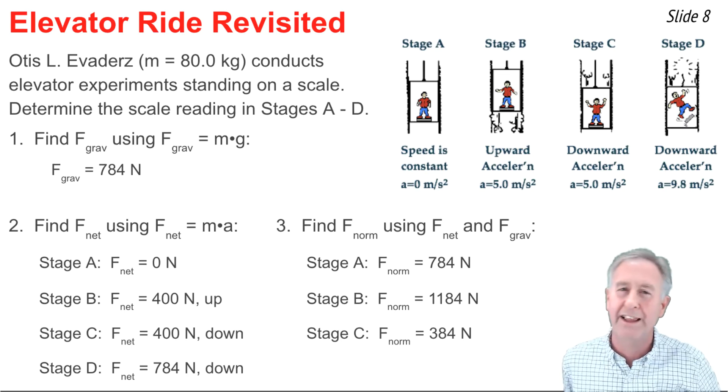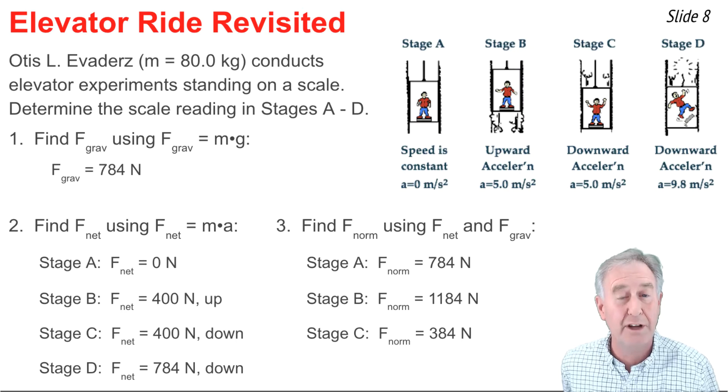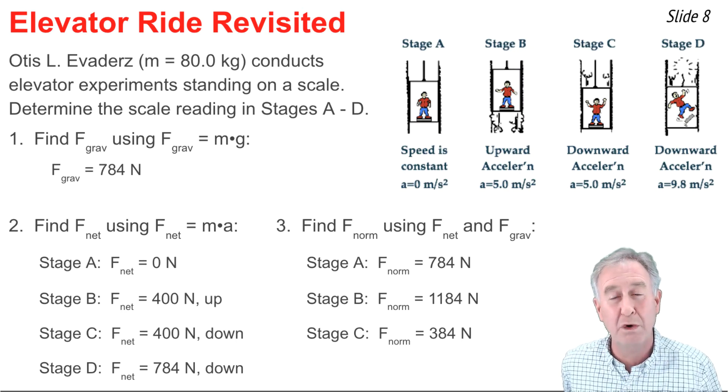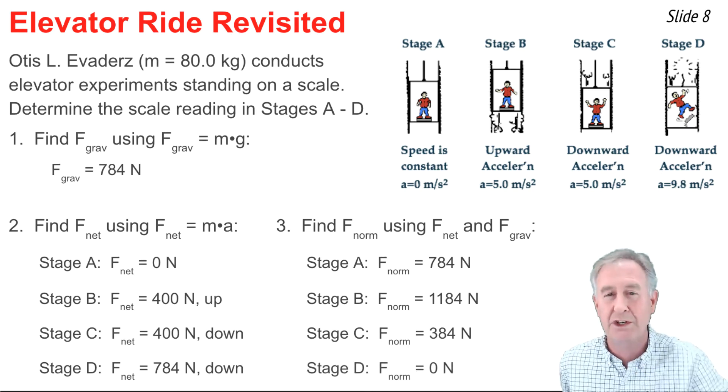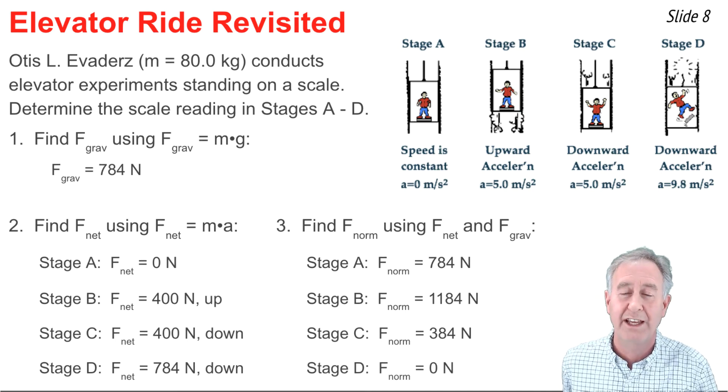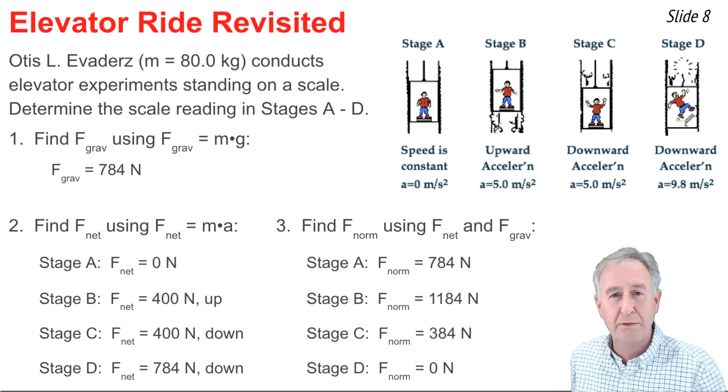In stage D, the down force wins by a landslide by 784 newtons, which means the up force is 784 newtons less than the down force, making the up force 0 newtons in stage D.